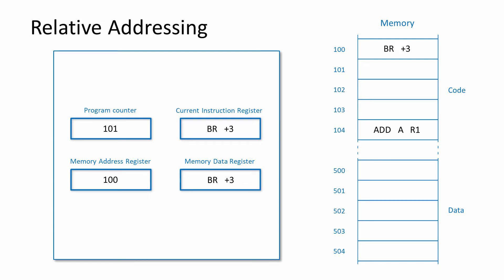The current instruction register shown here contains an unconditional jump instruction which makes use of relative addressing. When it's executed, the operand value 3 will be added to the 101 in the program counter to calculate that the target of the jump is the instruction at memory location 104. The address in the program counter is updated first so that it's pointing to location 104. Then control is passed to the new instruction — in this case an instruction to add the contents of register R1 to the value in the accumulator.